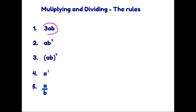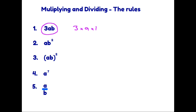Rule number one: we are looking at a term and that term is 3ab. Now in algebra, because we do not put the multiplication sign and simply put things next to each other, we can say that 3ab simply means 3 times a times b.